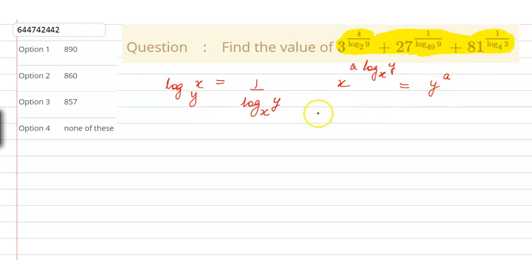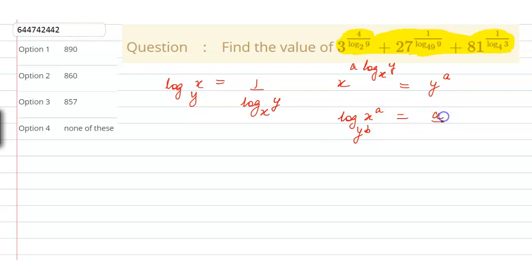The last property of log is that if we have an expression of the format log of x to the power a, and the base is y to the power b, then this is equivalent to a upon b into log of x to the base y.